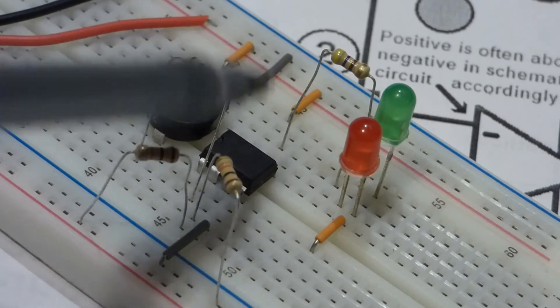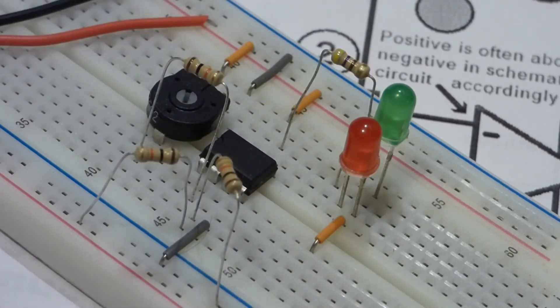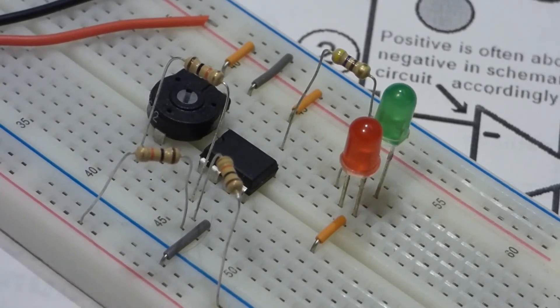And as soon as it goes negative we'll have a positive output and that will turn the green on. So that's right at the zero point, and with the Schmidt trigger we don't want that.